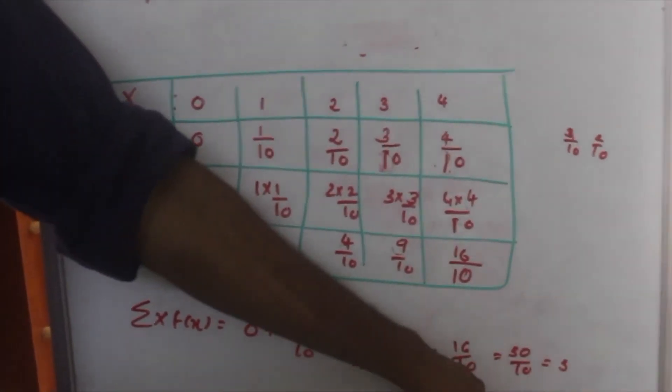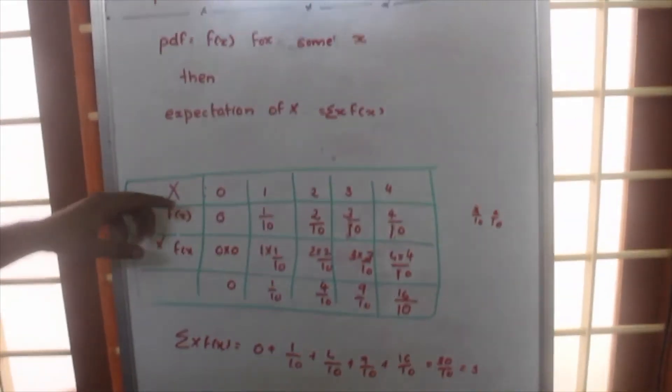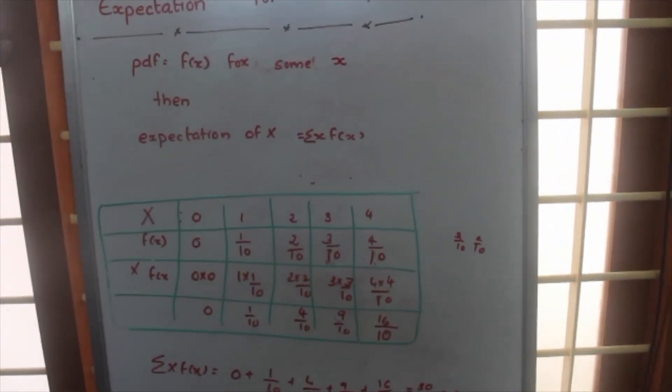So, this 3 is called as the expectation of the given function f of x and x given by this table. Thank you.